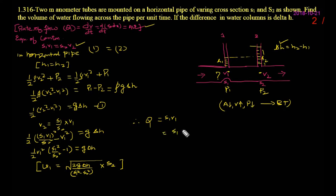You can write this also. Then, it will be S1 S2. You can write together. And inside the root, you have 2G delta H upon S1 square minus S2 square.